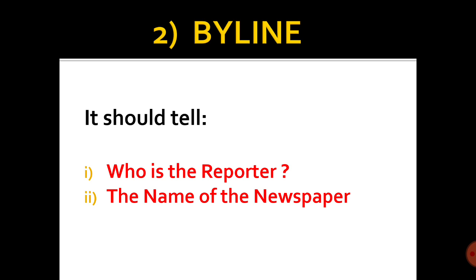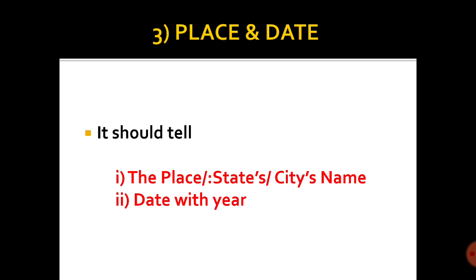At the bottom of the headline, just below it on the very right, you have to write the byline, which is the second point. It should tell who the reporter is — your name if it's given in the question. Do write your name, or write 'special correspondent' or 'the reporter', comma, and write the name of the newspaper also — Times of India, The Hindu, or whichever it is.